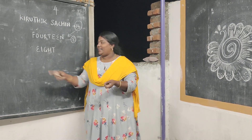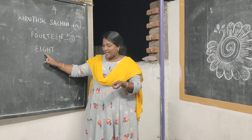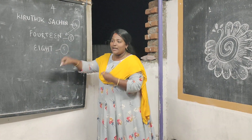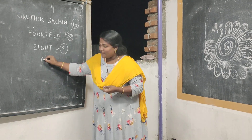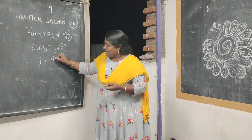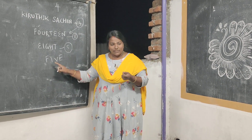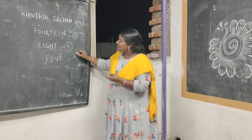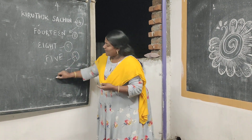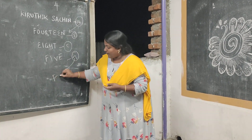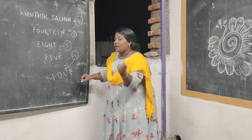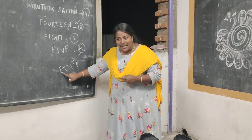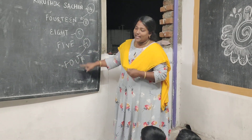Next, count the letters in 'eight': 1, 2, 3, 4, 5 — so I got 5. Now write the name of 5: F-I-V-E. Count it: 1, 2, 3, 4 — that's 4. Now write the name of 4: F-O-U-R. Count it: 1, 2, 3, 4. Again, 4. So you always get 4.